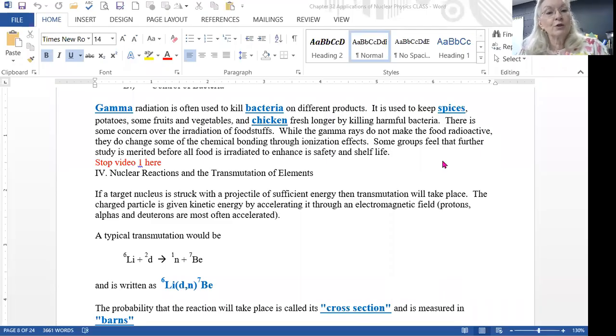Welcome back to chapter 32. We're picking up where we left off in the previous video, and now it's time to talk about transmutation of elements. That sounds harder than it really is. What it means is that you take a target nucleus and you bombard it with a projectile. The projectile, if it has enough energy, will enter the nucleus, make it unstable, cause the nucleus to emit some sort of energetic mass, and then turn into a daughter element. So the parent nucleus, which is the target, has changed or transmuted.